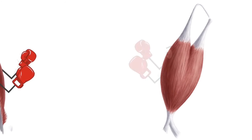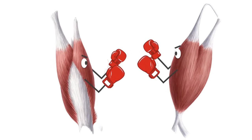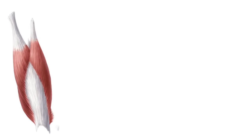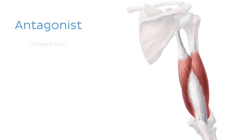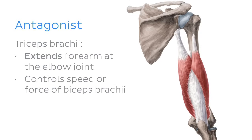The muscle or muscles which work in opposition to an agonist are known as antagonists. In this case, it's the triceps brachii which extends the forearm at the elbow joint. An antagonist is sometimes important in controlling the speed or force of the movement created by an agonist muscle.